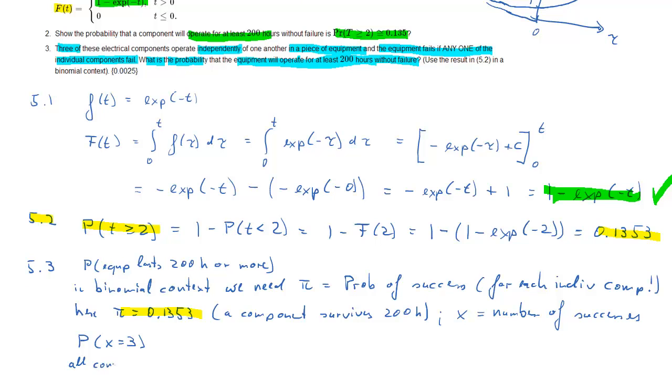And now we are well and truly in a binomial context, because the probability of three successes, meaning that all components survive at least 200 hours, which of course is exactly the same as saying that the equipment lasts more than 200 hours in our example.